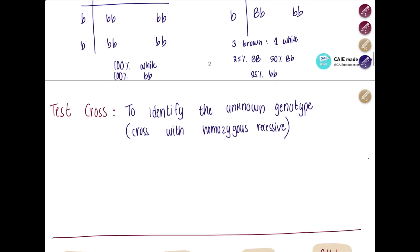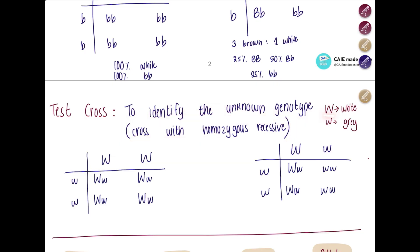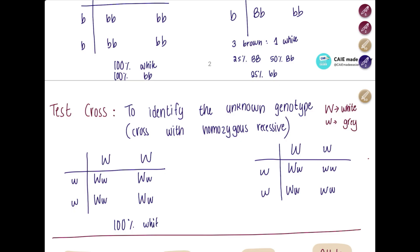What is a test cross? A test cross is used to identify an unknown genotype. For example, if there's a cat with black fur, you can see it's black but you don't know whether it's homozygous or heterozygous. You cross it with a homozygous recessive individual. Here, capital W represents white and small w represents gray. If the cat was homozygous dominant, all offspring will be 100% white. If the cat was heterozygous, the offspring will be 50% white and 50% gray.